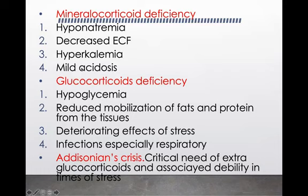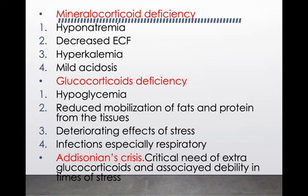Next, what happens in glucocorticoid deficiency? Keep in mind all the mineralocorticoid deficiency can also be due to less glucocorticoids such as cortisol. The major effect of cortisol on carbohydrate metabolism was to cause hyperglycemia — through gluconeogenesis and decreasing glucose entry into cells. Here, with a deficiency of glucocorticoid, it will lead to hypoglycemia, which can of course be life-threatening.